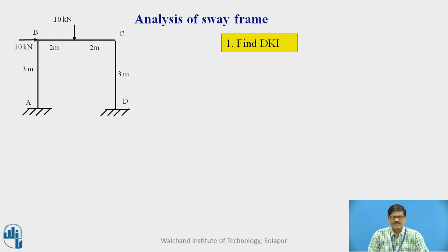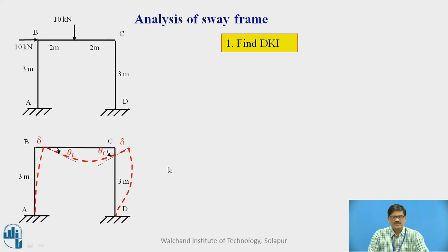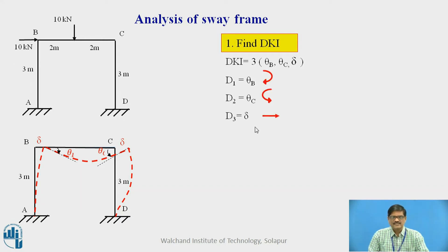To begin with, we shall calculate the degree of kinematic indeterminacy. For that, all the possible deformations at the node points are to be determined. Here in this problem, if I consider the deformed shape shown in red color, the rotation at B is possible, rotation at C is possible, and also there is a sway possible towards right because of the 10 kilonewton load. So dK is 3: θB, θC, and Δ. Let us assume θB as clockwise, θC as anticlockwise, and Δ (sway towards right), and designate these unknowns as d1, d2, and d3.